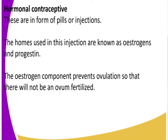We also have the morning pills, also called emergency pills. The female gender knows more about these. These pills are taken 72 hours after having a sexual encounter, and they make sure that the egg is also not fertilized.